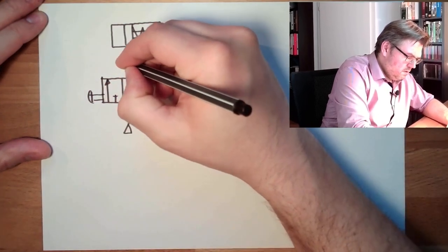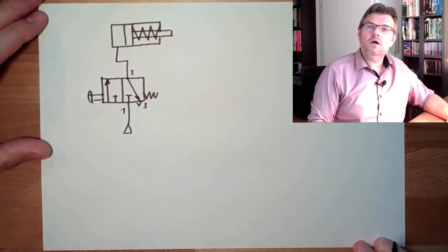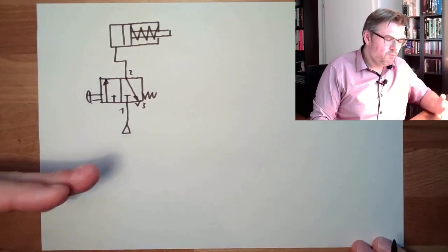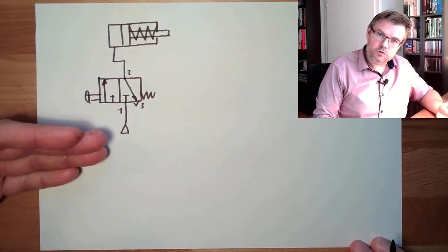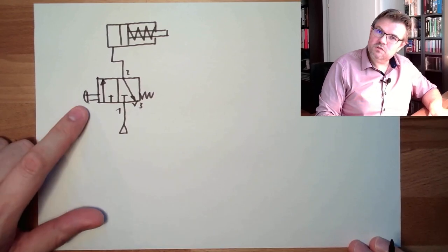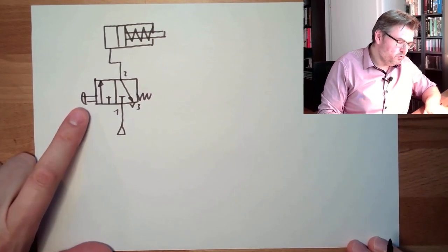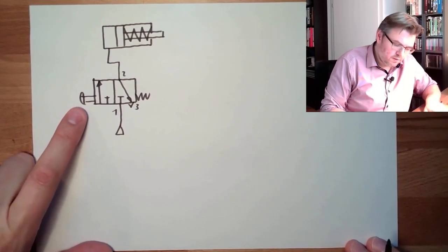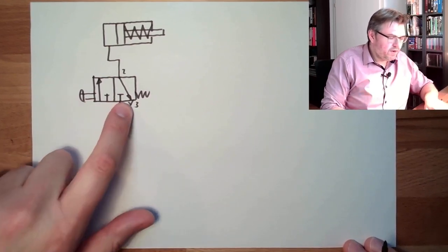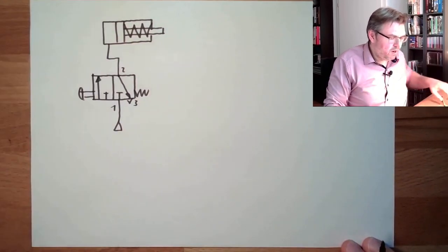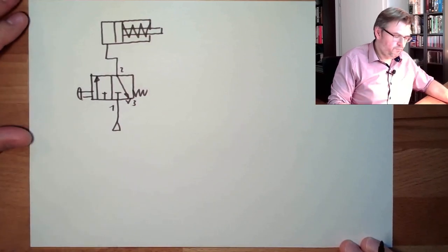Okay, pretty straightforward approach. This is the most simple approach because my input element, the button here, is already my control element, and my control element is switching the power to my cylinder.